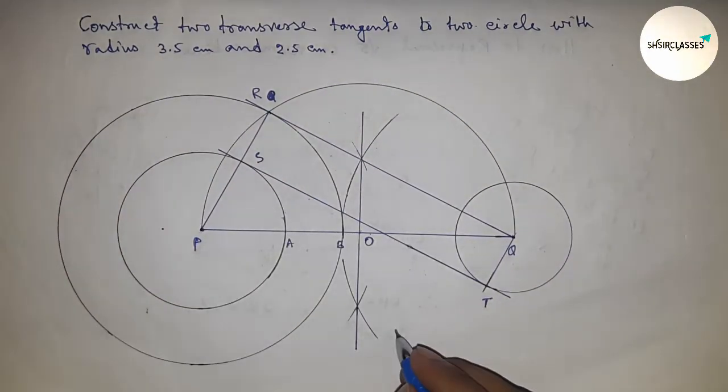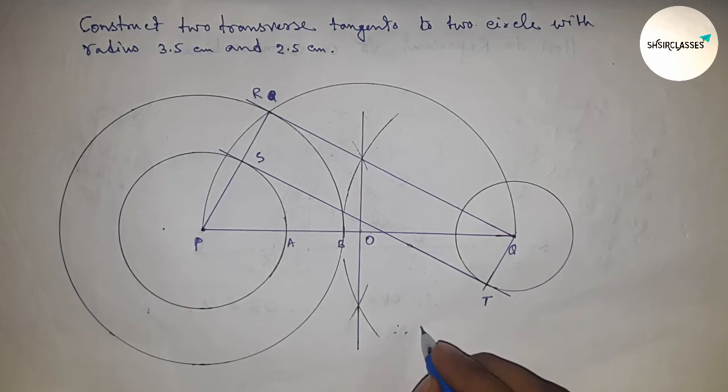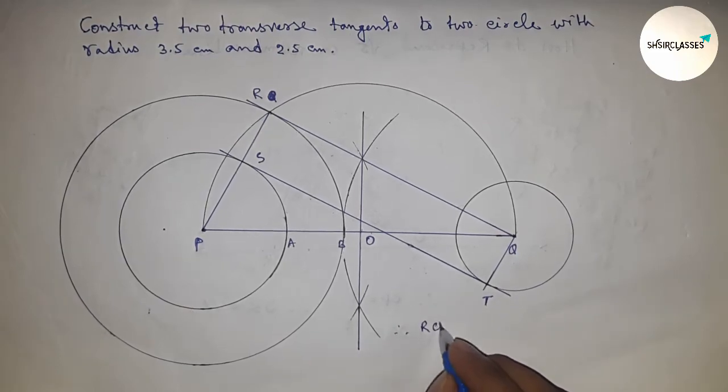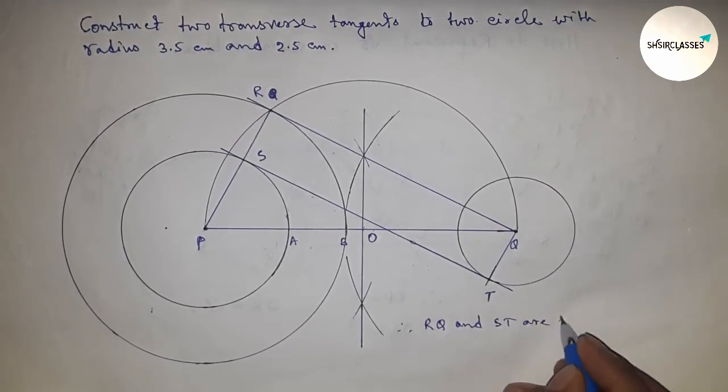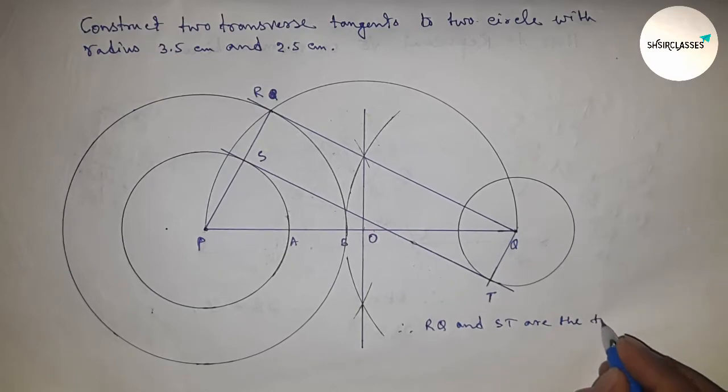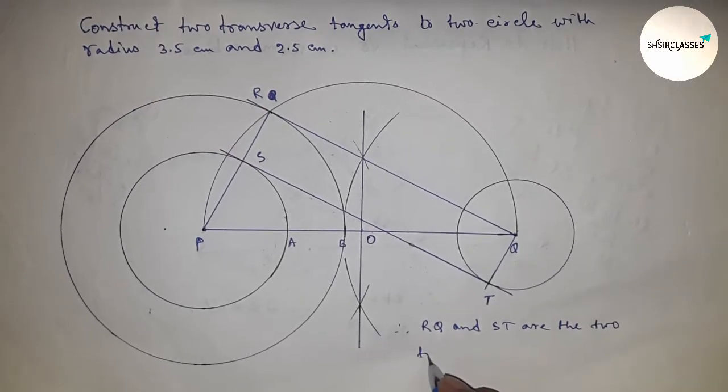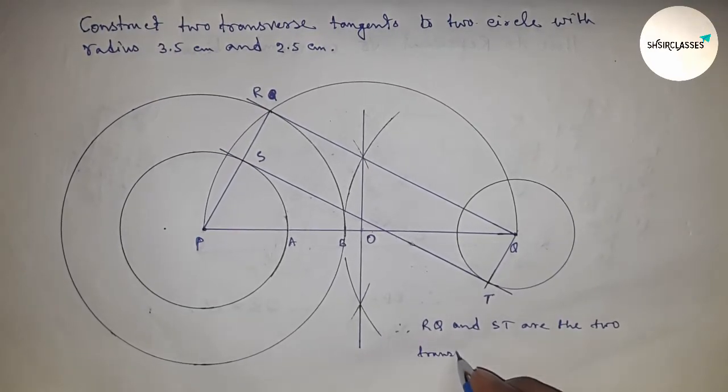Therefore, RQ and QT are the two transverse tangents to the two circles.